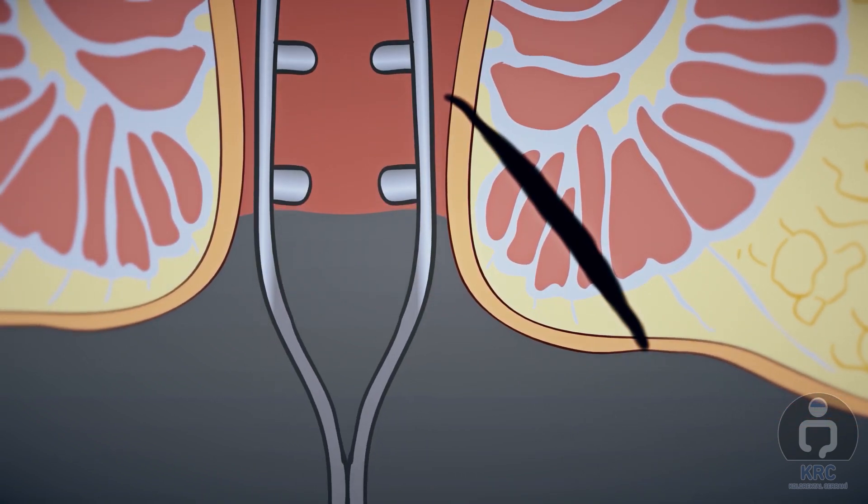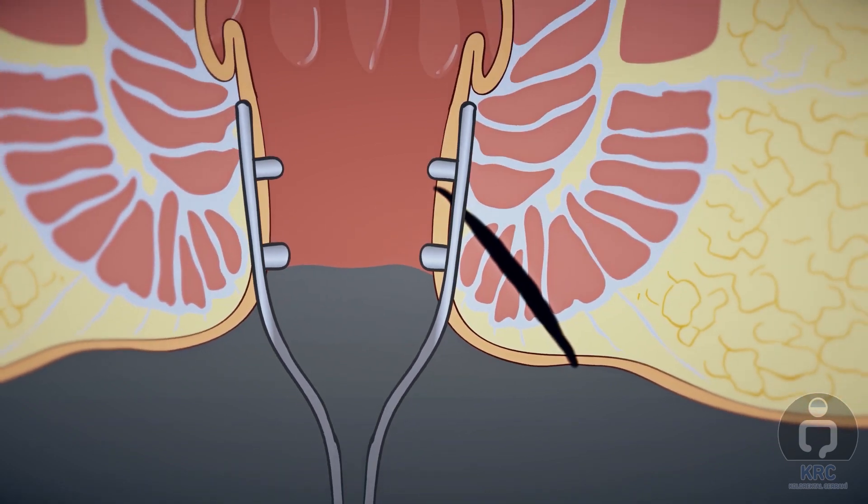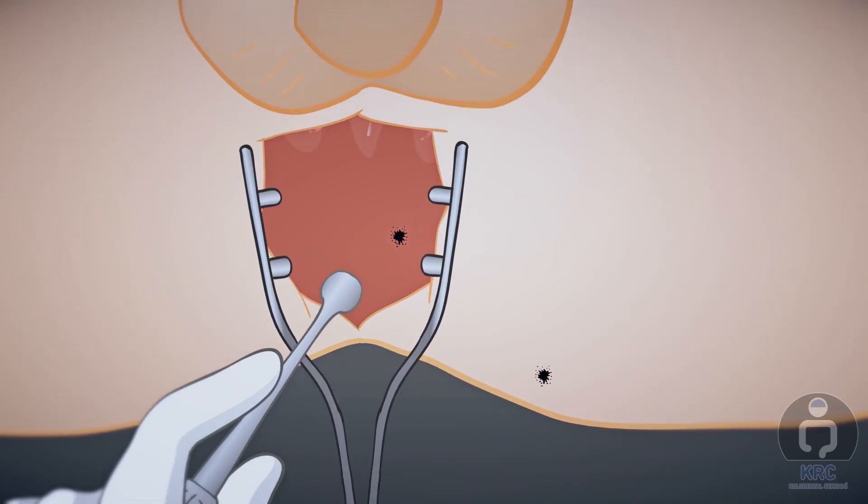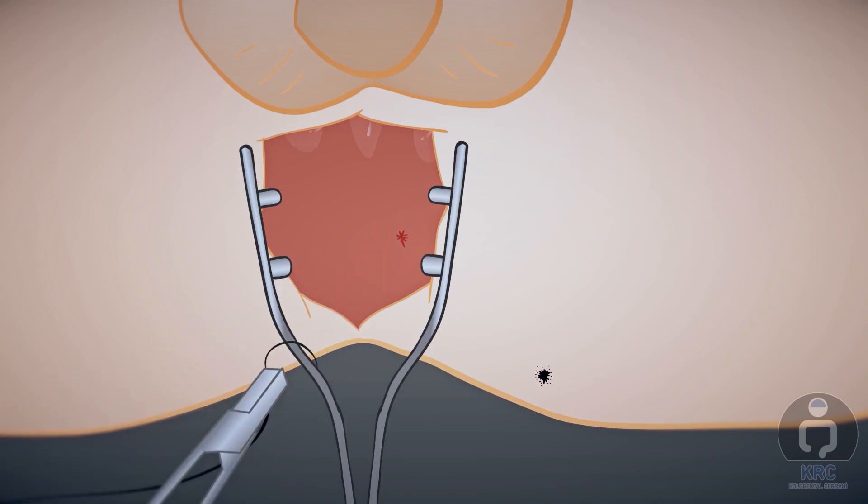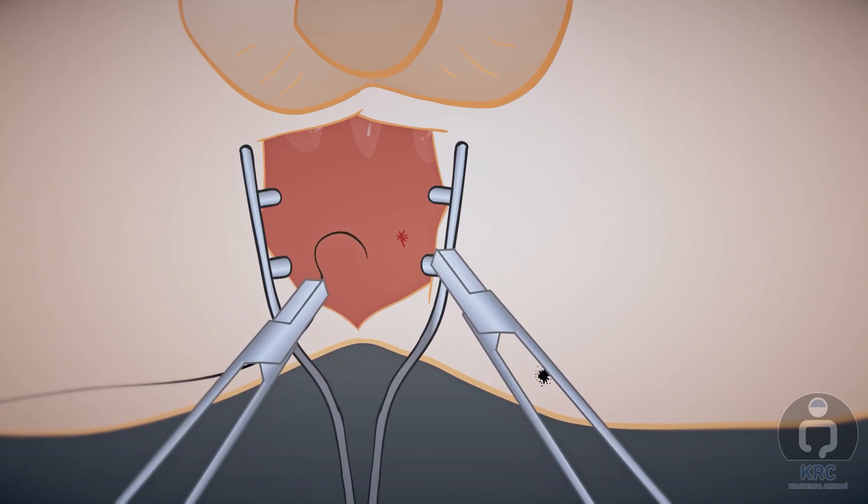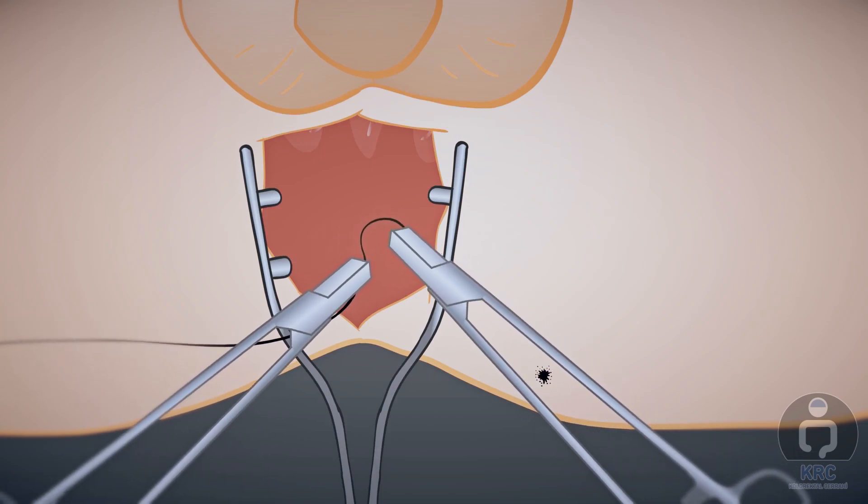We always prefer to close the internal orifice. It is better to remove all necrotic tissues then use one or two stitches to close the internal orifice.